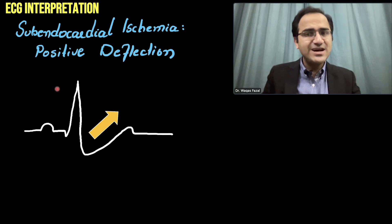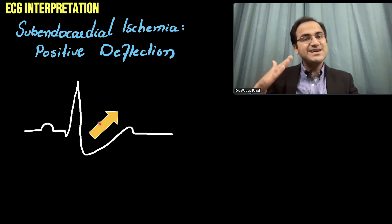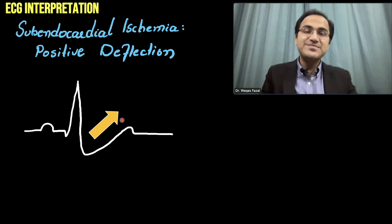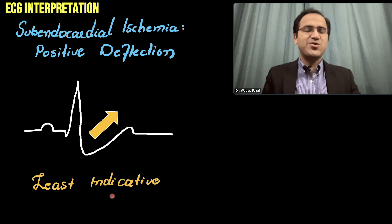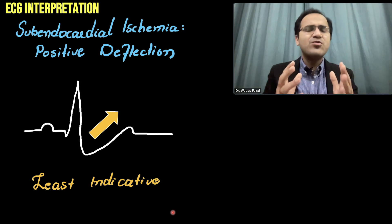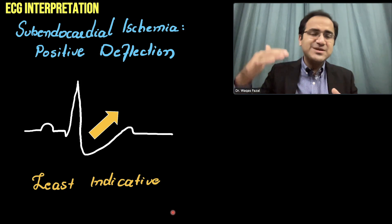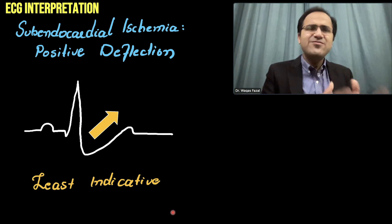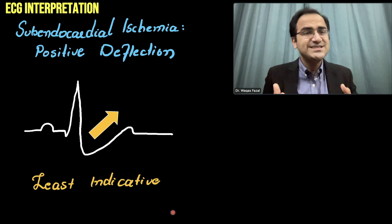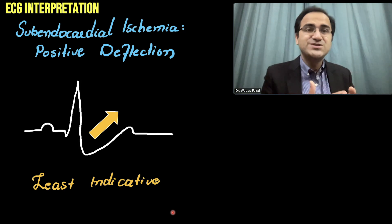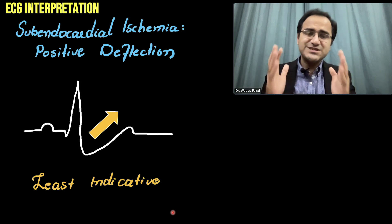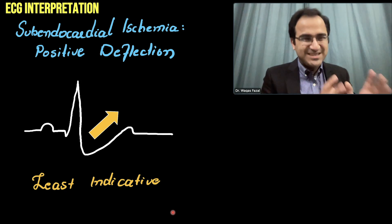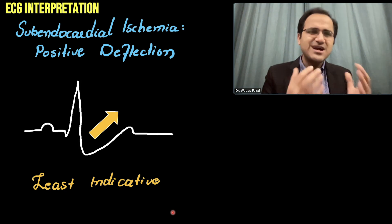The third type is positive deflection, in which the ST segment slopes upward. This is least indicative of subendocardial ischemia. However, remember: regardless of whether the ST segment depression is most or least indicative, if the patient is having symptoms, you have to treat that patient. Regardless of the ECG changes, you must intervene — otherwise you will lose the patient. This classification is for academic purposes; in real practice, treat the symptomatic patient.